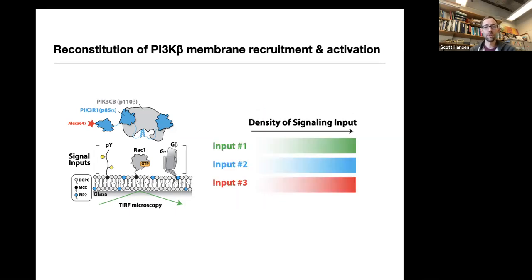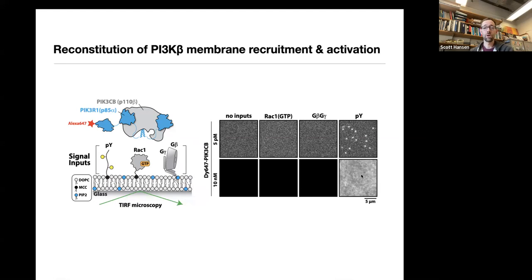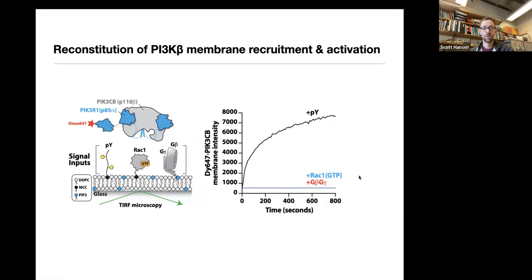The first experiment varied the density of these signaling inputs and looked at what controls the localization of PI3 kinase beta. At very low concentration where we can resolve single molecules, only in the presence of PY peptide do we get robust recruitment of PI3 kinase. This bottom panel shows a much higher concentration - 2,000-fold increase - where you can no longer resolve single molecules, just a blanket of fluorescence. We can monitor the kinetics of membrane absorption and confirm that only in the presence of PY do you get robust membrane recruitment.